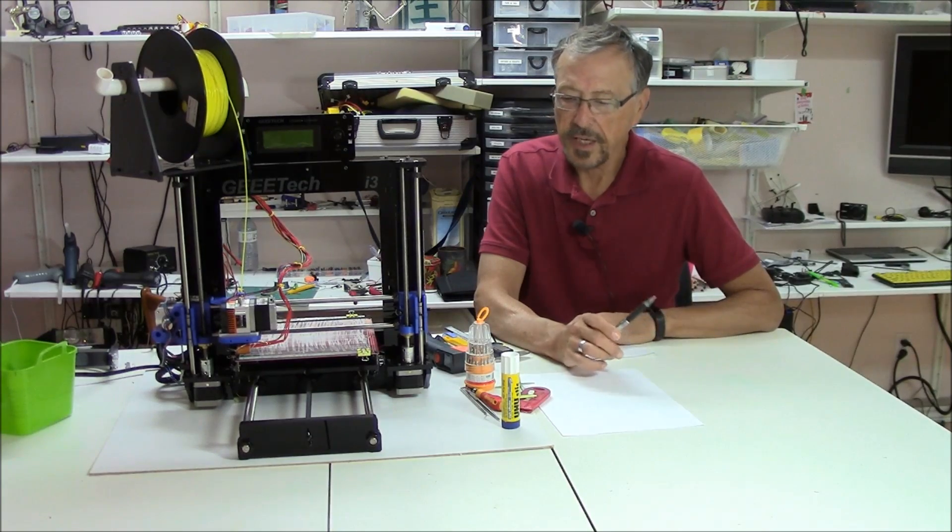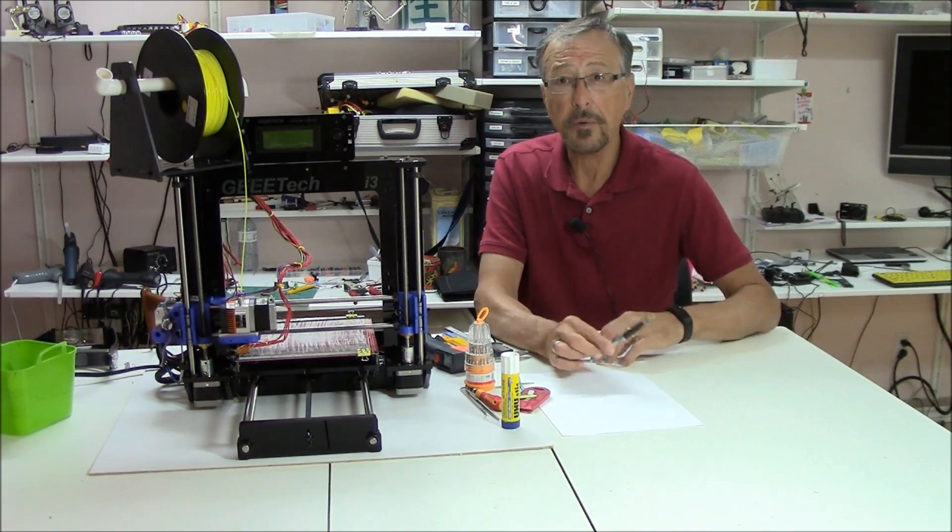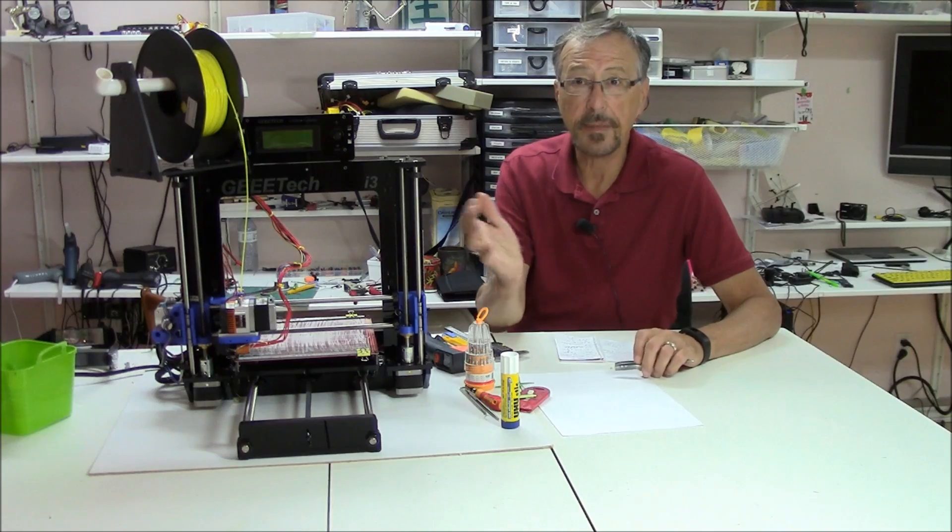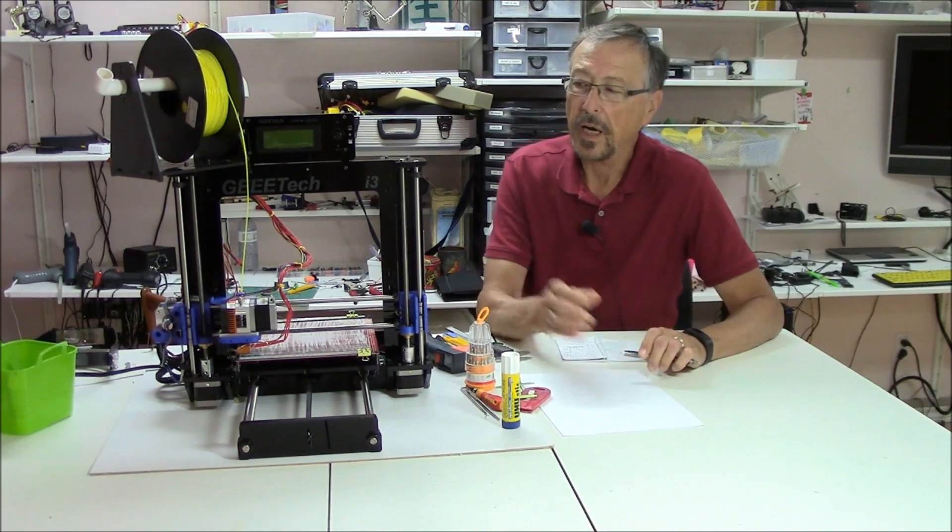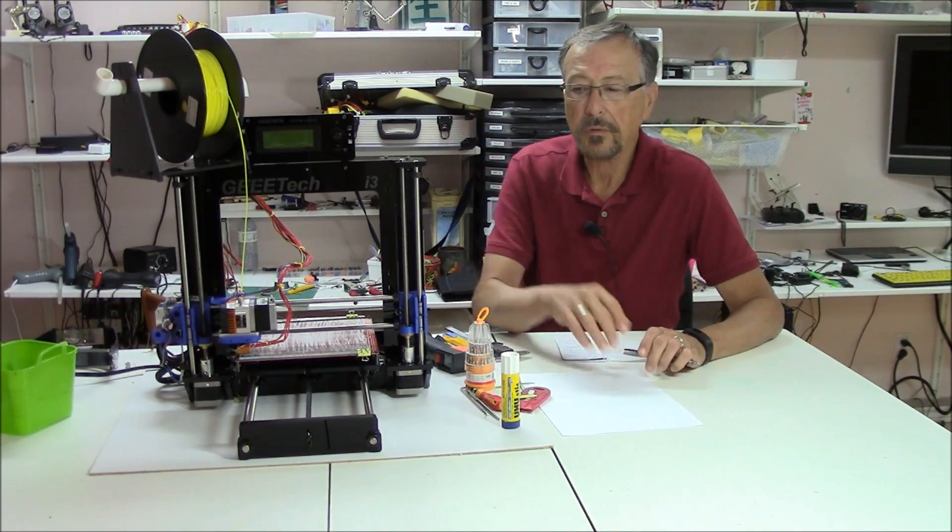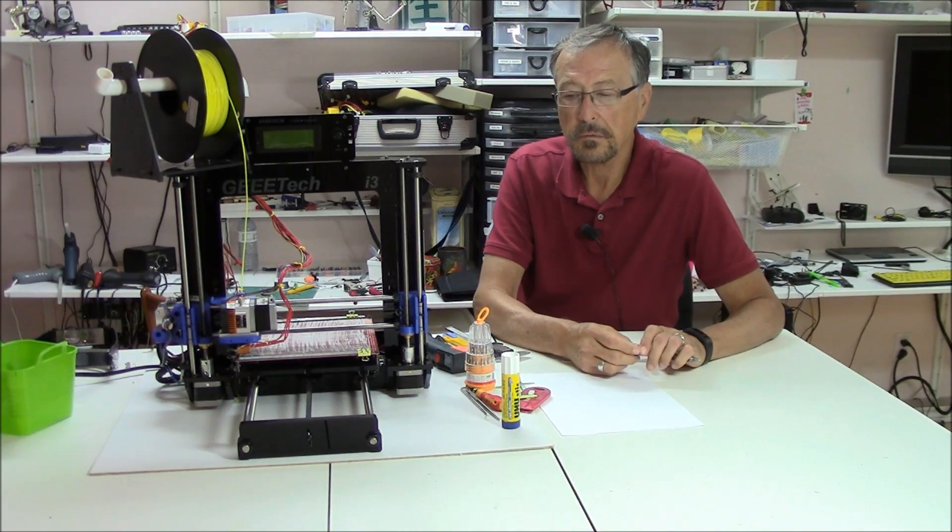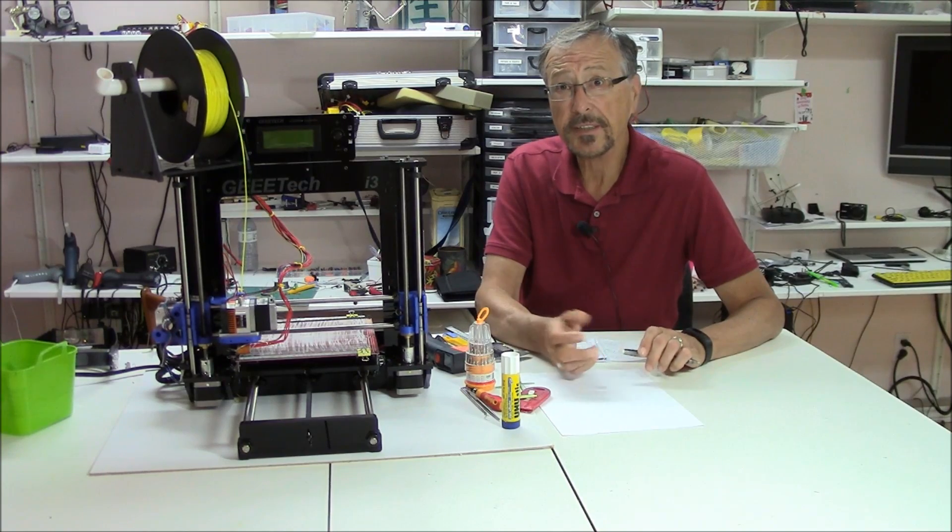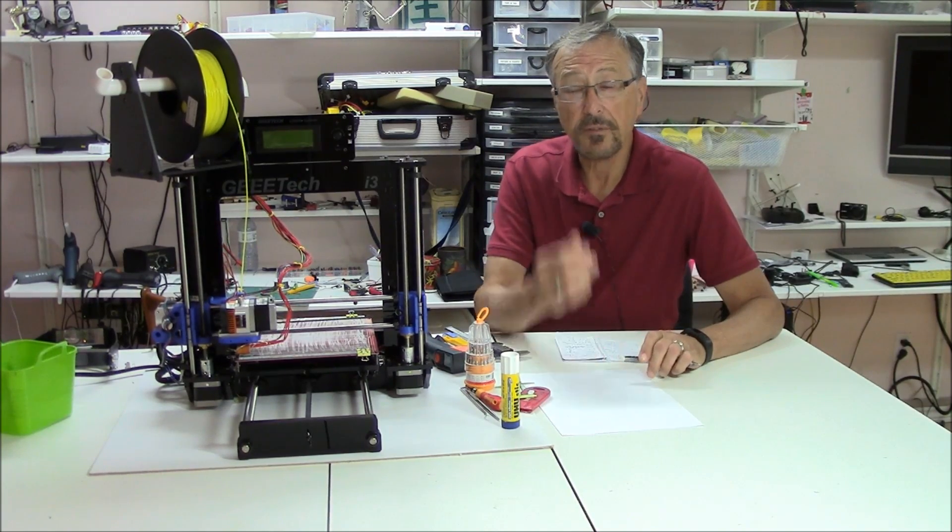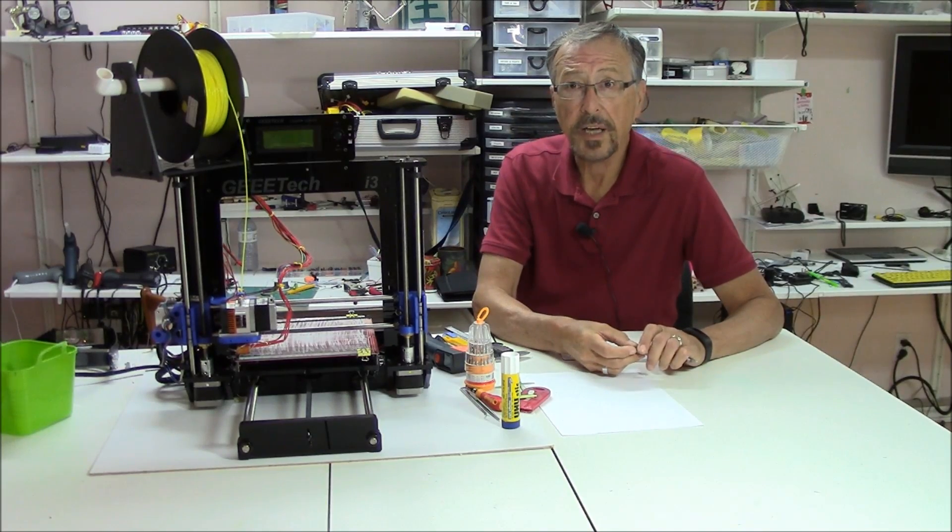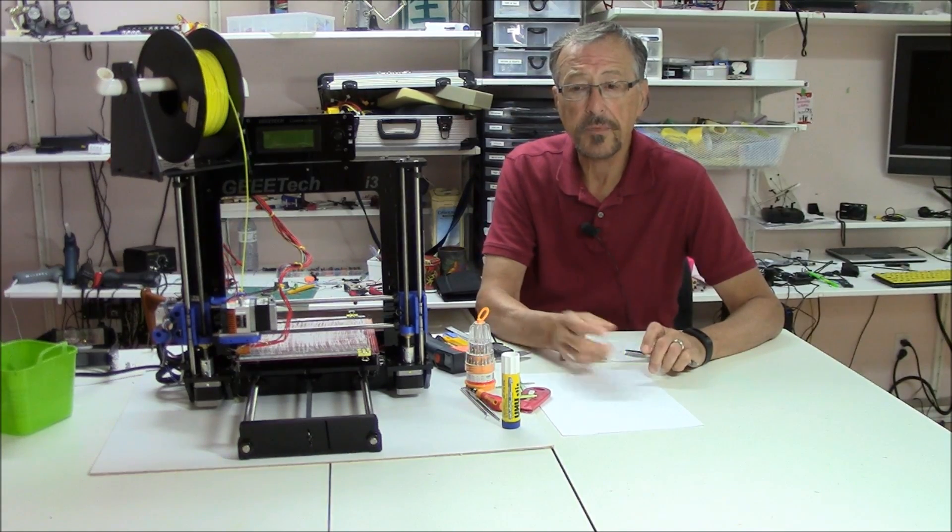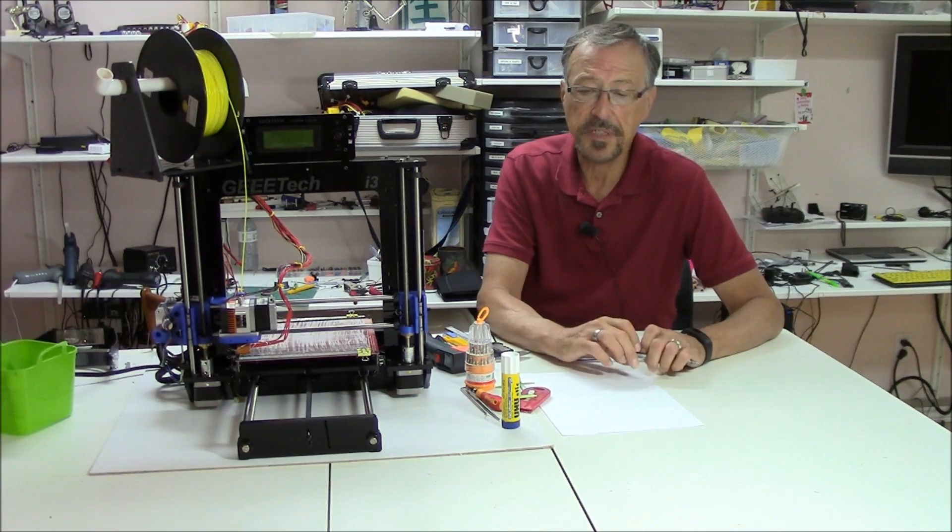So I thought what I'd do today is I want to do a series of videos. Today's video is going to be talking about problems I had in assembling and getting my first output from the GTEC Prusa printer. Then in the next series, I'm going to talk about some tips, things I've learned on how to make printing easier. And then finally, I will be looking at some of the techniques for making specific parts.